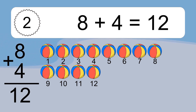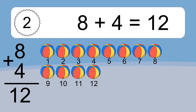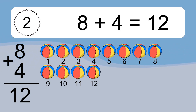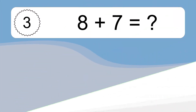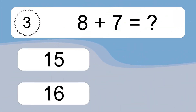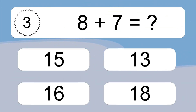Let's count it. 1, 2, 3, 4, 5, 6, 7, 8, 9, 10, 11, 12. 8 plus 7 equals what?